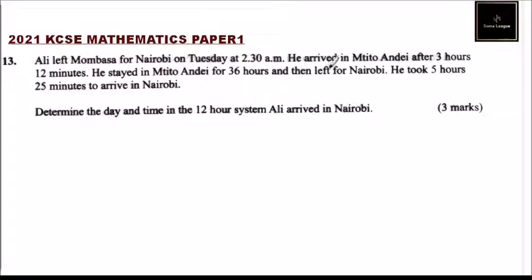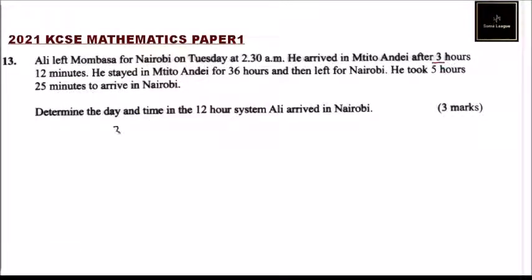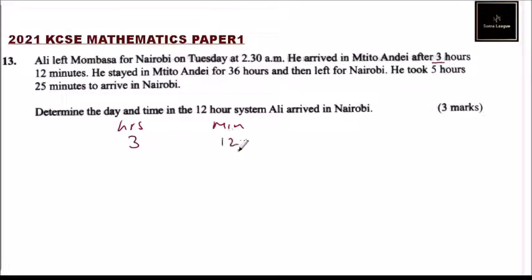He left Mombasa at 2:30 a.m. on Tuesday. We can get the total time he took to travel from Mombasa to Nairobi. We take the first leg: 3 hours 12 minutes to get to Uchitwandei — we can write this as 3 hours and 12 minutes.